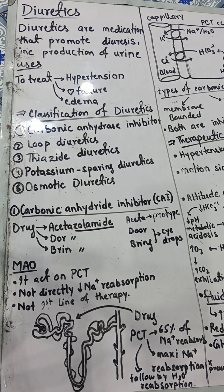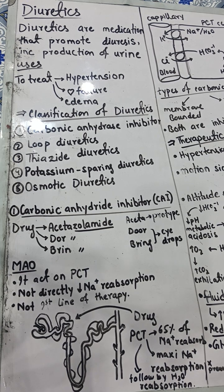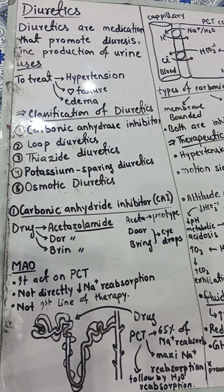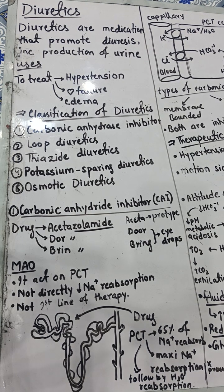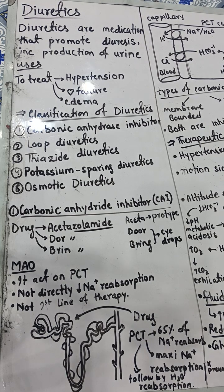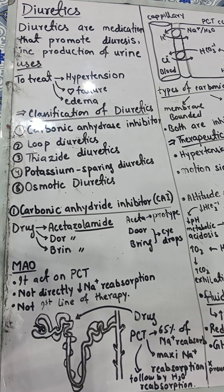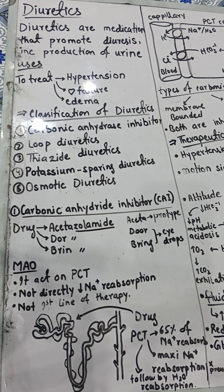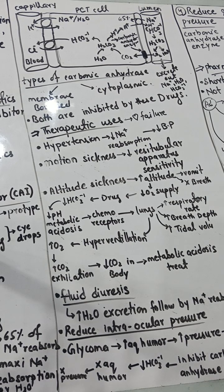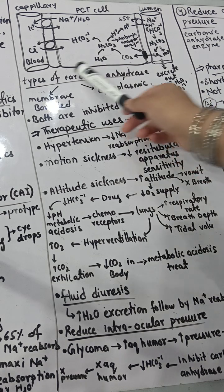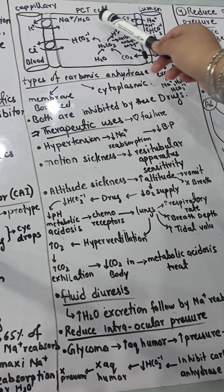Maximum sodium reabsorption occurs in the PCT, followed by water reabsorption through osmosis — whenever there is an increase in solute concentration, water moves to compensate. Let's discuss the full mechanism of how CAI acts on the PCT to control sodium and water reabsorption, using a diagram.